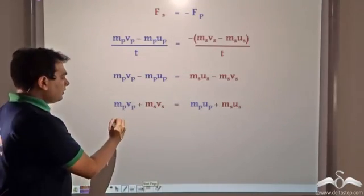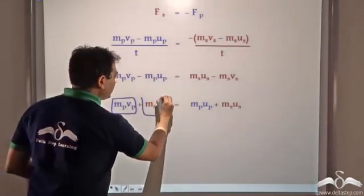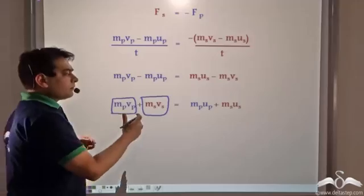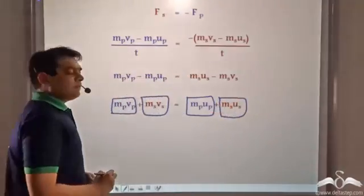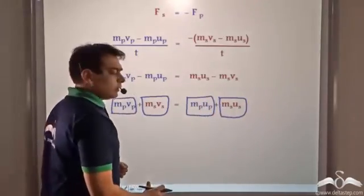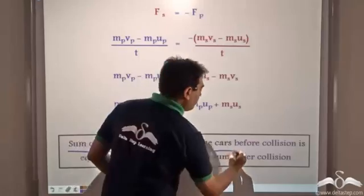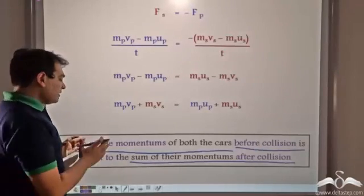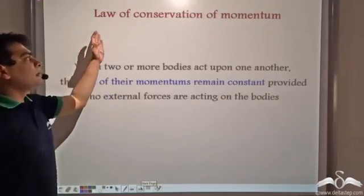What is this? MP·Vp is the final momentum of the parked car and Ms·Vs is the final momentum of the speeding car, so the left-hand side is the sum of the final momenta of both cars. On the right-hand side, MP·UP is the initial momentum of the parked car and Ms·Us is the initial momentum of the speeding car, so the right-hand side is the sum of momenta of both cars before collision. This equality tells us that the sum of momenta before collision equals the sum of momenta after collision — that is, the total momentum remains the same. This is known as the law of conservation of momentum.